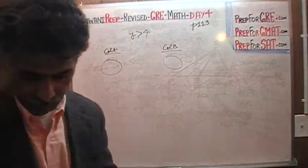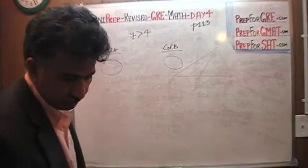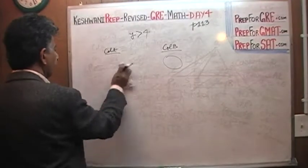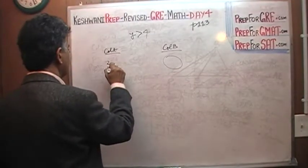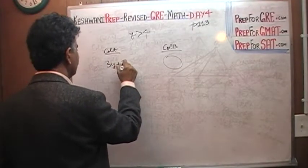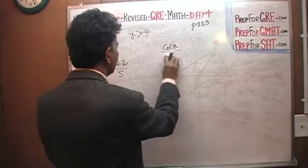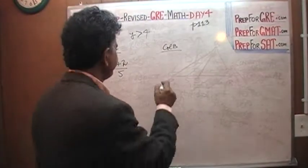We are asked to compare the two quantities: 3Y plus 2 over 5, versus Y.